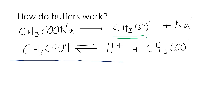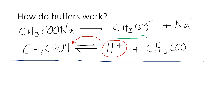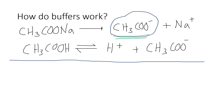What happens if you add H⁺ ions? Well, if you add H⁺ ions into your buffer, the concentration of H⁺ starts to go up, and what happens is the equilibrium shifts to the left-hand side to consume the excess H⁺ ions, hence keeping the pH constant. Additionally, the H⁺ ions will react with the ethanoate ion to form ethanoic acid, and hence the concentration of H⁺ remains constant.